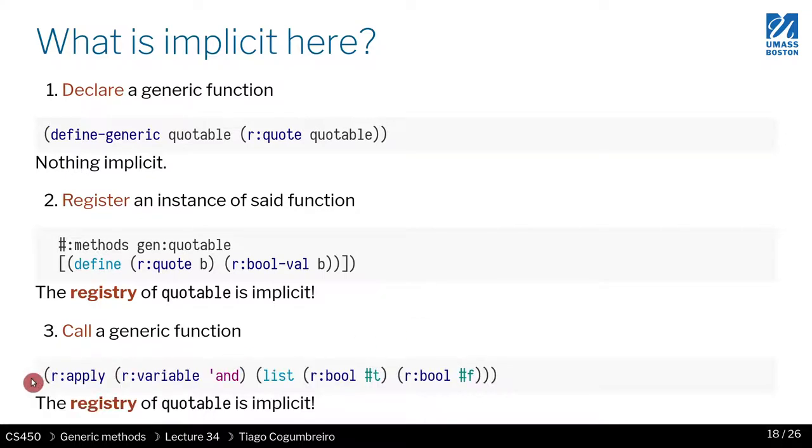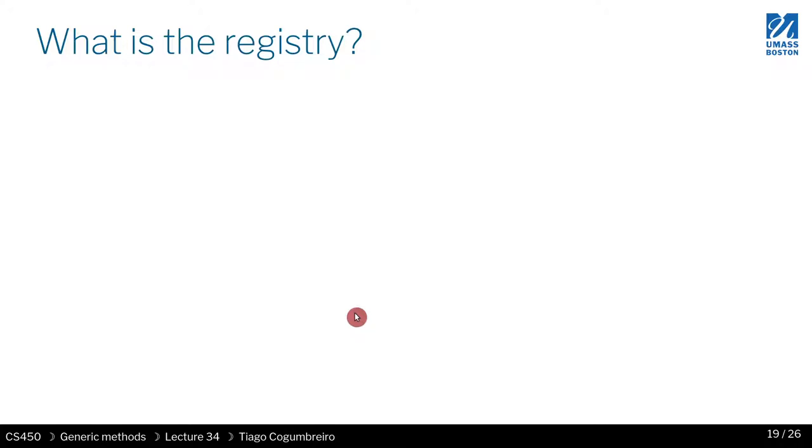So again, when you call, it's implicit. You're just calling it. So where is this registry, it is also implicit. So we need to make the registry implicit. The runtime information that holds what?